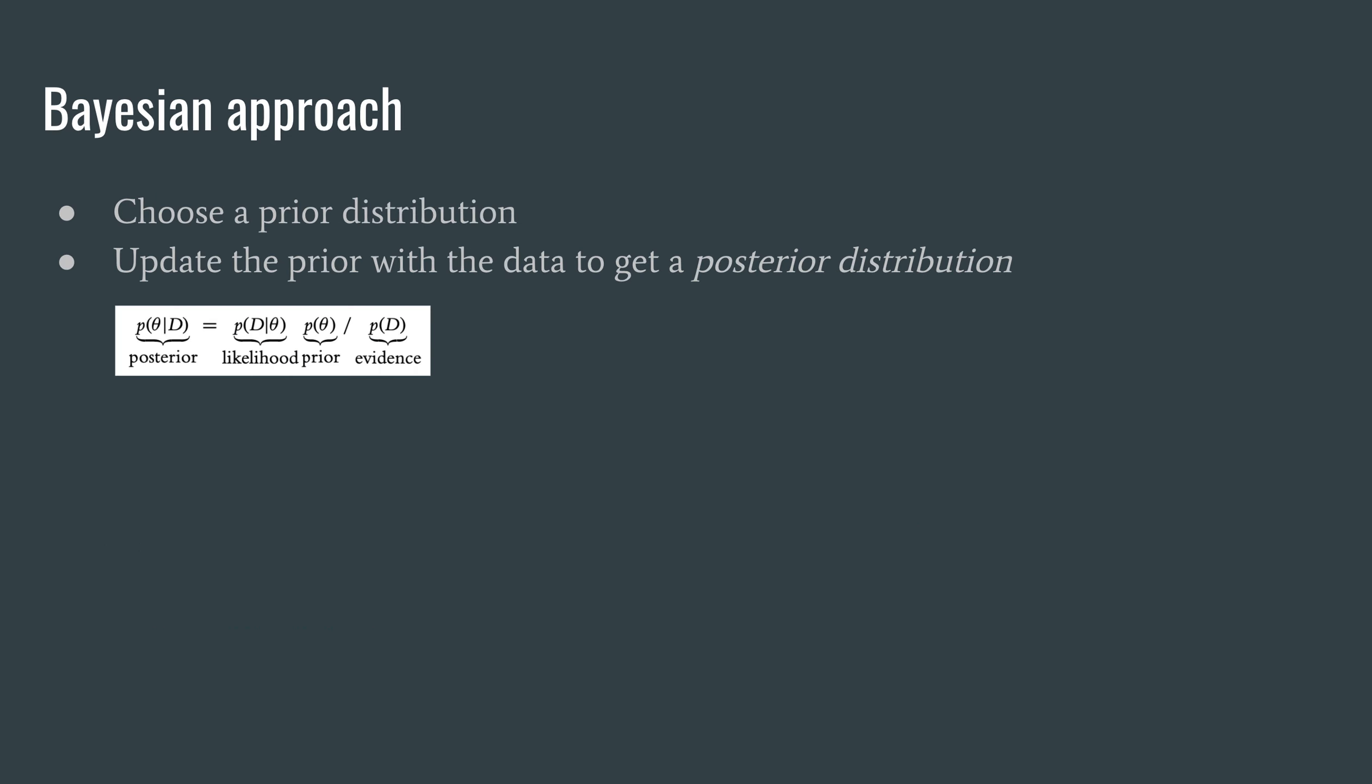So in the Bayesian approach we start by choosing a prior distribution and we update the prior with the data to get a posterior distribution. And we do this through Bayes rule which is shown in this formula here.